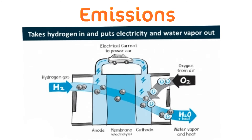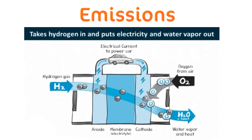Emissions: When hydrogen cycles through a fuel cell to create electricity that will power a car, its only by-products are heat and water. This is another major advantage over fossil fuels, which create harmful carbon emissions when burned.